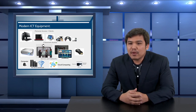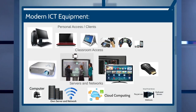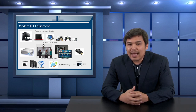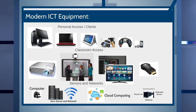The term modern can be relative and quickly changes with time, but for now the following can still be safely considered as modern ICT equipment, categorized into three groups. The personal access or client ICT equipment are usually used by learners and teachers to access information personally or in small groups. These devices usually act as clients, which receive information from servers. The popular clients are the personal computer, laptops, tablet computers, phablets or phone tablets, smartphones, and sound players for audio lectures and audiobooks.